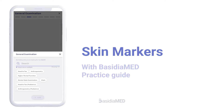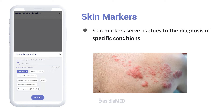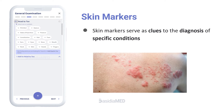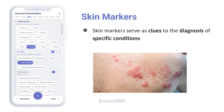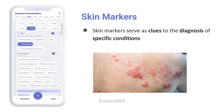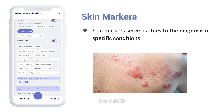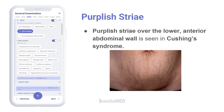Skin markers serve as clues to the diagnosis of specific conditions. Some important skin markers to look for in order to get a clue to the diagnosis in a patient include the following: purplish striae over the lower anterior abdominal wall, which is seen in Cushing's syndrome.